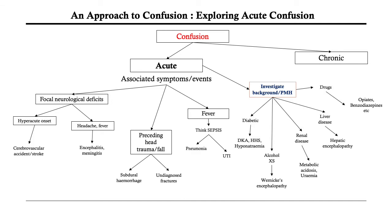In patients with confusion and focal neurological signs, there are two main possibilities. A hyperacute onset would suggest a cerebrovascular accident or stroke. Focal neurological deficits with confusion, headache, and fever should suggest encephalitis or meningitis of an infective cause. In confusion with recent head trauma or recent fall, you should raise your suspicions for an intracranial bleed — most commonly a subdural bleed in the elderly population. Recent falls can also point towards undiagnosed fractures which can lead to confusion if left untreated, so it will be useful to do a head-to-toe screen and look for recent chest x-rays.